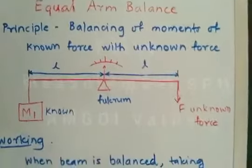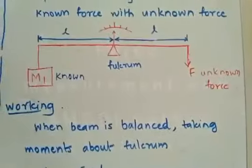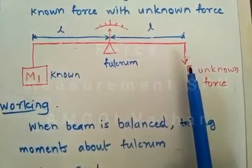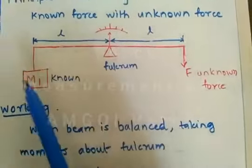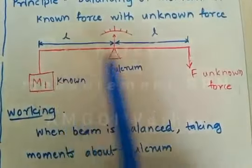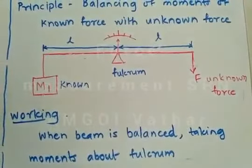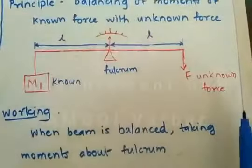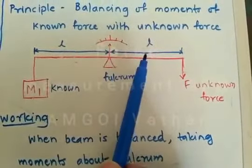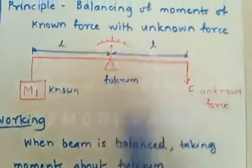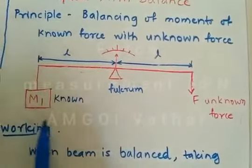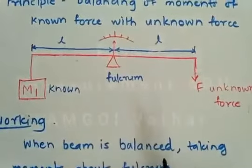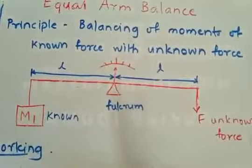Now, how does this work? To measure the unknown force, the unknown force is applied at one arm of the beam, and due to the unknown force, the beam will be imbalanced. Thus, the pointer will move in one direction, and the mass M1 is adjusted such